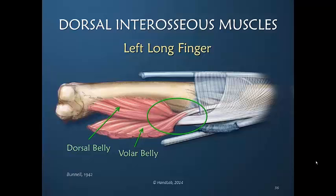That adherence of those tendon units is called saddle syndrome. This crossover where there can be some adherence that influences digital motion is not saddle syndrome. Saddle syndrome refers to the tendons of the interosseous muscle and the lumbrical muscle.